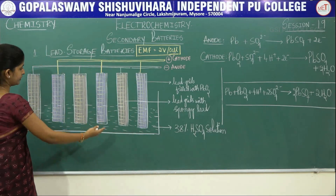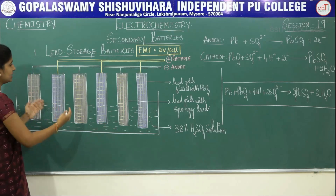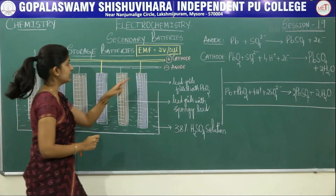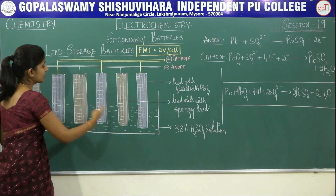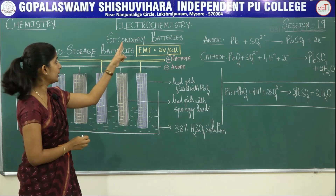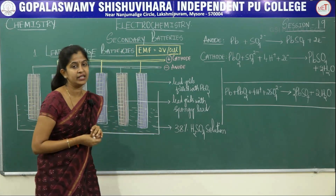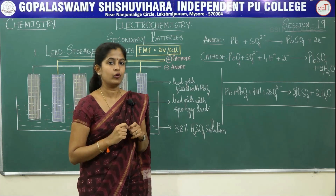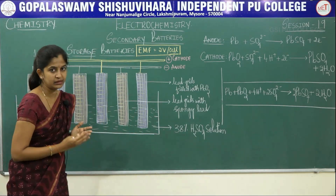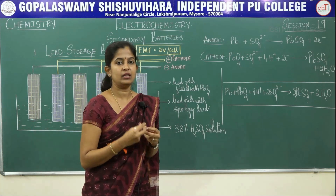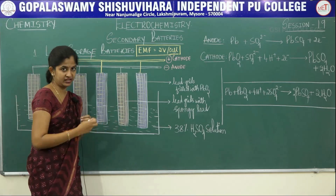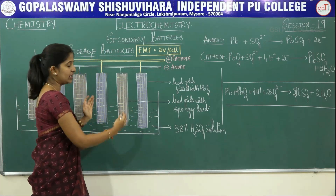If you look into the pictorial representation of the cell, the cell looks like this. Here I have taken three cells. Each one cell has an anode and a cathode. The EMF of one cell is 2 volts. There are three cells, so the total EMF of this battery is 2 into 3, which is 6 volts. Usually the batteries are available in 6 volts, 12 volts, or 24 volts based upon the automobile being used. Batteries are nothing but N number of cells joined in series. Here I have taken three cells connected in series to give a lead storage battery of total EMF 6 volts.